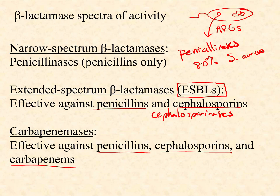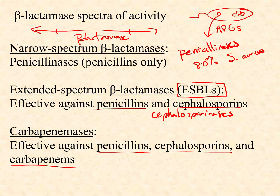Some plasmids will have multiple different beta-lactamases all encoded on the same plasmid. And remember how a gene works: the beta-lactamase gene on the plasmid must be expressed through transcription and translation to produce a protein. So you've got a beta-lactamase gene as double-stranded DNA, but through expression it forms the beta-lactamase protein — and it's the protein that acts as the enzyme that chews up our penicillins, cephalosporins, or carbapenems.